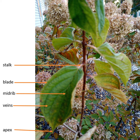Species or plants that germinate with more than one embryonic or seed leaf are called dicotyledonous or dicots. Species or plants with one seed leaf or cotyledon are called monocotyledonous or monocots.